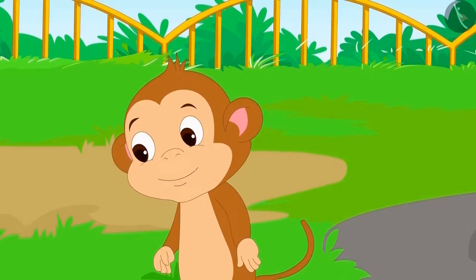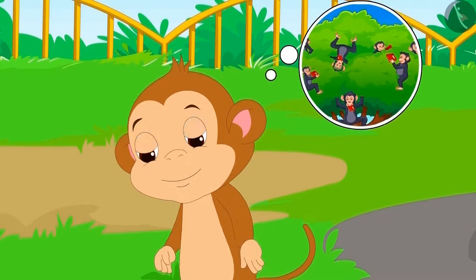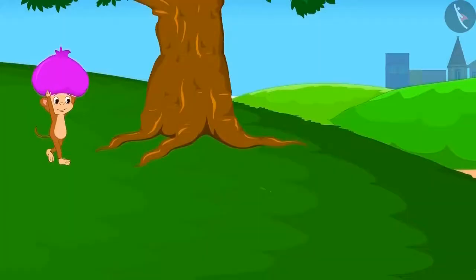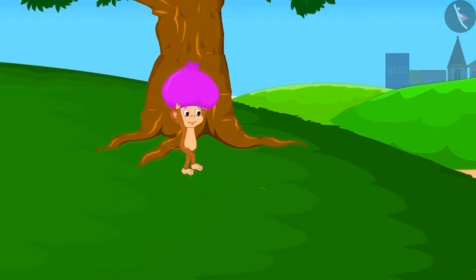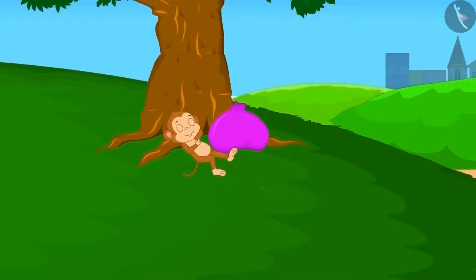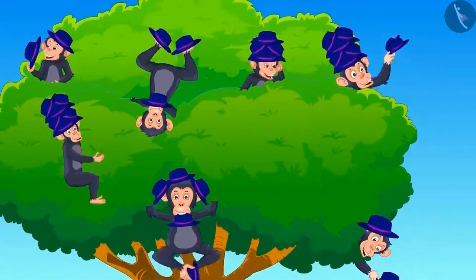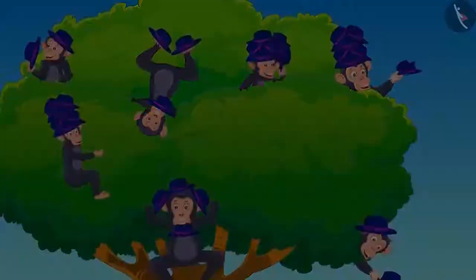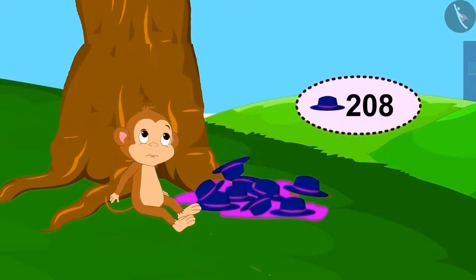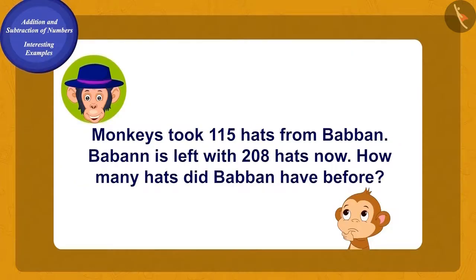Babban was very clever. He had heard from the villagers about the mischief of the monkeys and had thought of a plan. The next day, Babban took a few hats and set out towards the city. He deliberately slept under the same tree. When he woke up, he realized some of his hats were missing — the monkeys were wearing his 115 hats and he had 208 hats left.